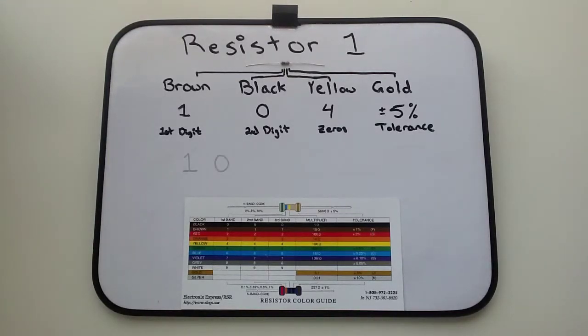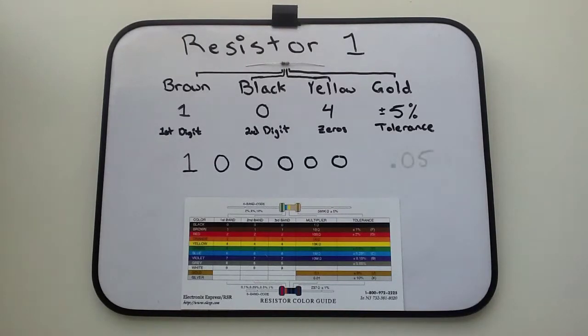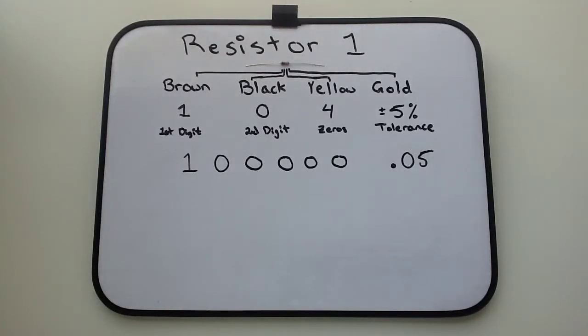The first and second significant digits are 1 and 0. There are four zeros and the tolerance is 5%. The minimum and maximum tolerance for this resistor is calculated by multiplying its resistance value of 100,000 ohms by 5%, which equals 5,000.